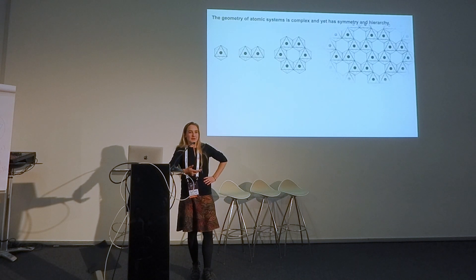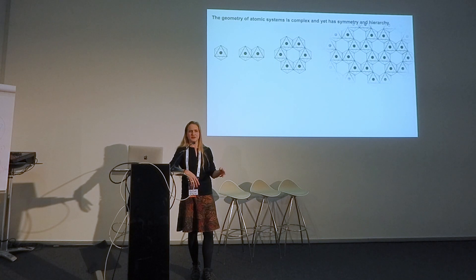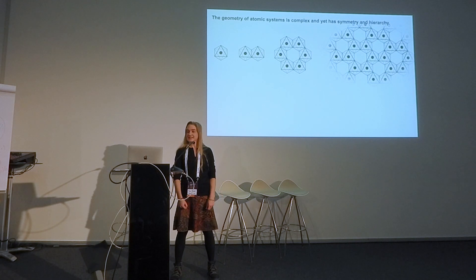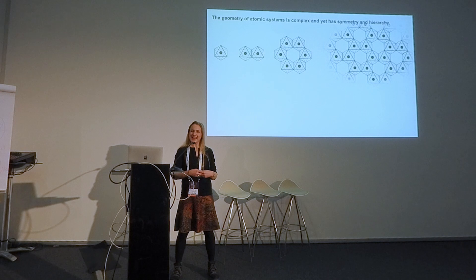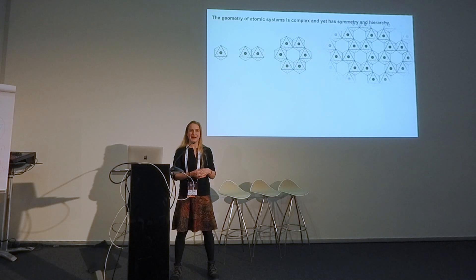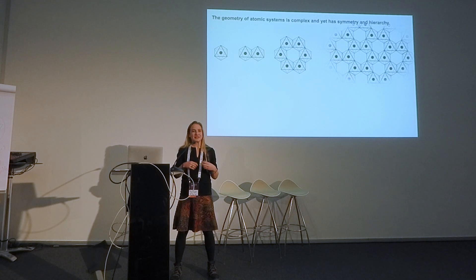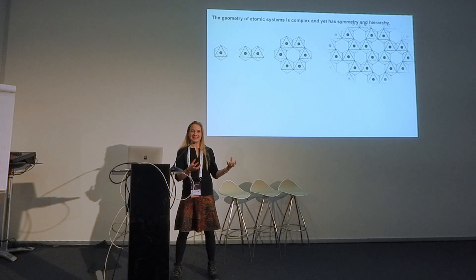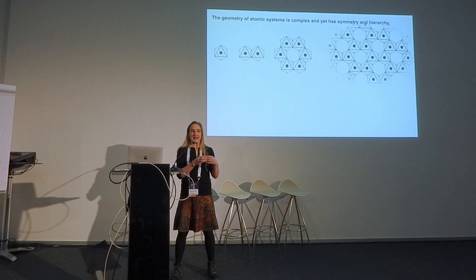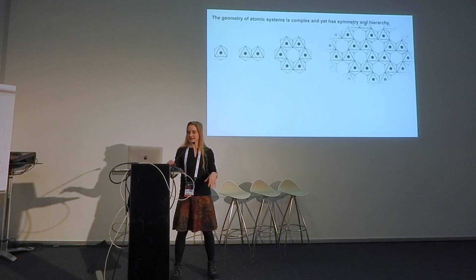The geometry of atomic systems — and by atomic systems I mean crystals, molecules, nanoclusters, proteins, anything that has atoms represented by points — is very complex. Despite that, it has a certain symmetry and different hierarchies of geometric patterns. For example, an atom surrounded by six others in the form of an octahedron can be connected to another octahedron sharing two atoms, and you can build circles and from that a hexagonal lattice.